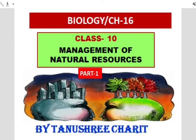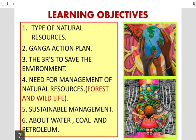Namaste students, we are starting a new chapter: Management of Natural Resources. Though it is a project/activity-based chapter, I will ask you to read it as it is always good to know all chapters in your syllabus. In this chapter we are going to learn about types of natural resources, the Ganga Action Plan, the 3R formula to save the environment, need for management of natural resources like forest and wildlife, sustainable management, and water, coal and petroleum.